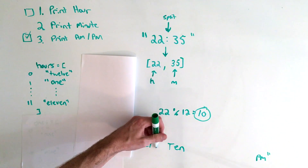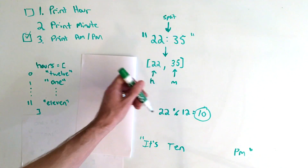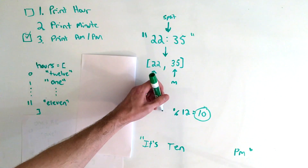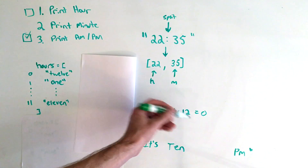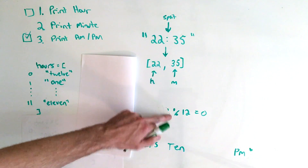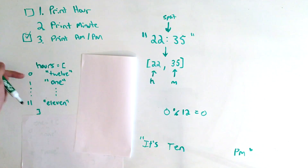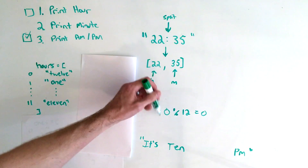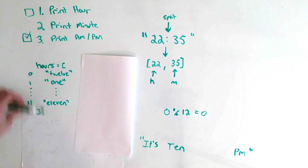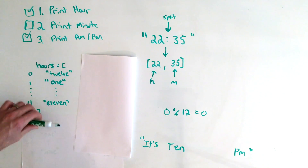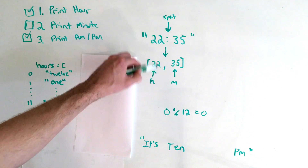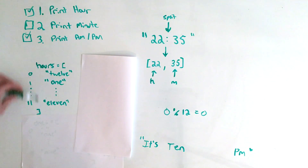We prefix the output with 'its'. If instead of 22 the input was 12, we'd get index 0, which gives us '12'. And if the input was 0, we also get index 0, which is '12' — because 00 is 12 a.m. That's how you solve the print hours sub-problem: declare an array where each index points to the string representation, then mod your input hours by 12 to get the index.